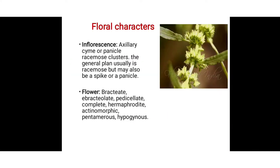Next is the floral character. In floral character, the first is inflorescence — the arrangement of the flower on the axis. They are axillary, spike, panicle, or racemose cluster. The general plan is usually racemose but may also be spike or panicle. The plant may have a solitary axillary flower, meaning a single flower is borne in the axil of a leaf or main axis portion. They are generally racemose but sometimes arranged as a spike.